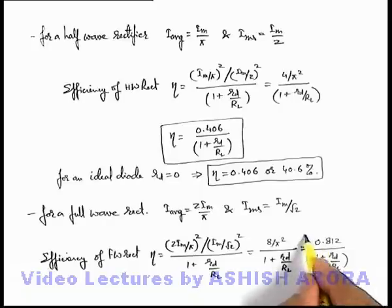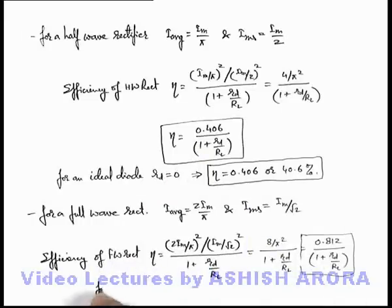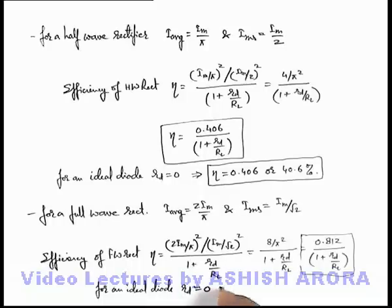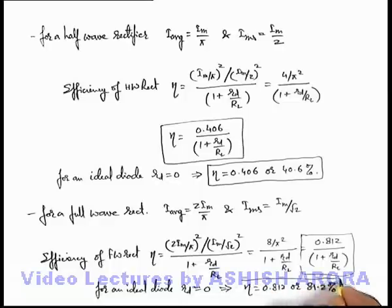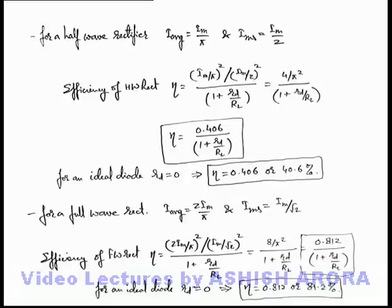We can see the efficiency of a full wave rectifier is twice that of the half wave rectifier. For an ideal diode used in making the full wave rectifier, the dynamic resistance in forward biasing is taken as zero, which implies its efficiency will be 0.812, or 81.2 percent — again twice that of the half wave rectifier. You need to keep these efficiencies in mind whenever they are asked to be calculated, or for numerical problems based on these in different kinds of problems.